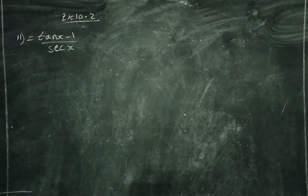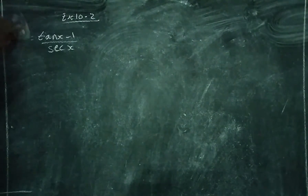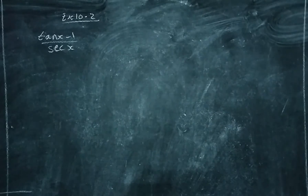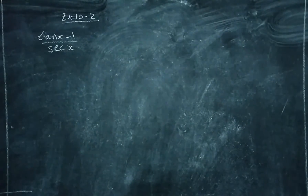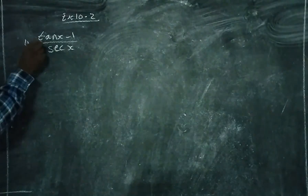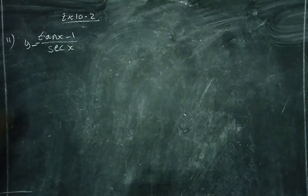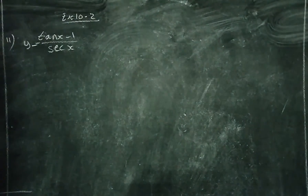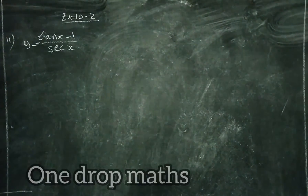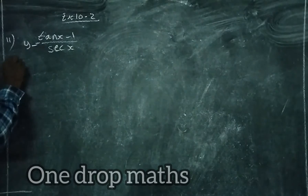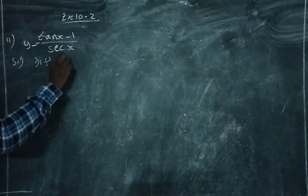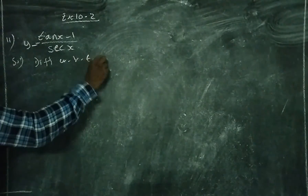I am going to find the differentiation of question 11. They give y equal to tan x divided by sec x. They ask to differentiate with respect to the corresponding variable. Here x is the variable, so we differentiate with respect to x.